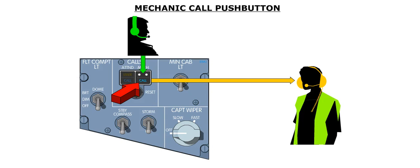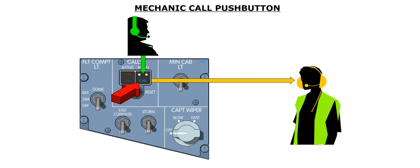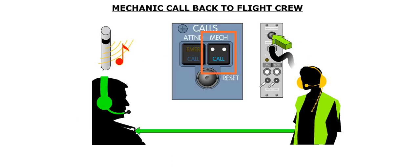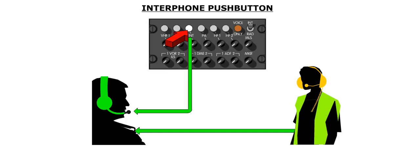Calls to and from mechanics work similarly through the mechanic button on the calls panel. When the mechanic button is pressed, a horn sounds in the nose gear bay to get the mechanic's attention. The mechanic can then press the call push button next to the headset jack in the gear well to call the flight deck, causing the blue call caption to illuminate in the mechanic push button on the calls panel and a chime to sound. The flight crew can then transmit to the mechanic by pressing the interphone transmission key on the ACP and then using a push-to-talk button.